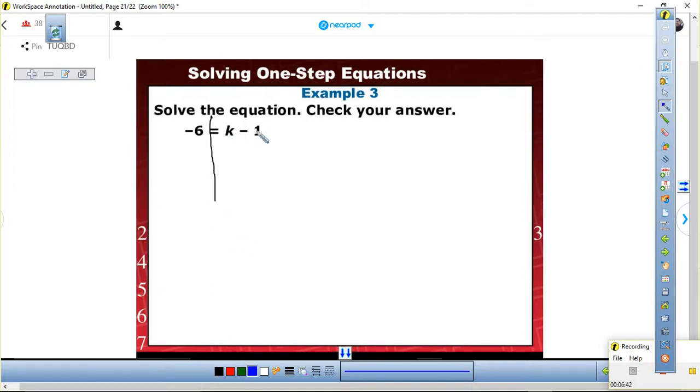Step one, simplify. Can we simplify the right side? Nope. How about the left side? Nope. Step two, isolate the variable, which means we need to look at the operation. This is subtraction. What is the inverse? Addition. We add one, add one. These cancel. And if I add one to each side, tell your neighbor the property for that one. Addition property of equality. Negative five equals K.